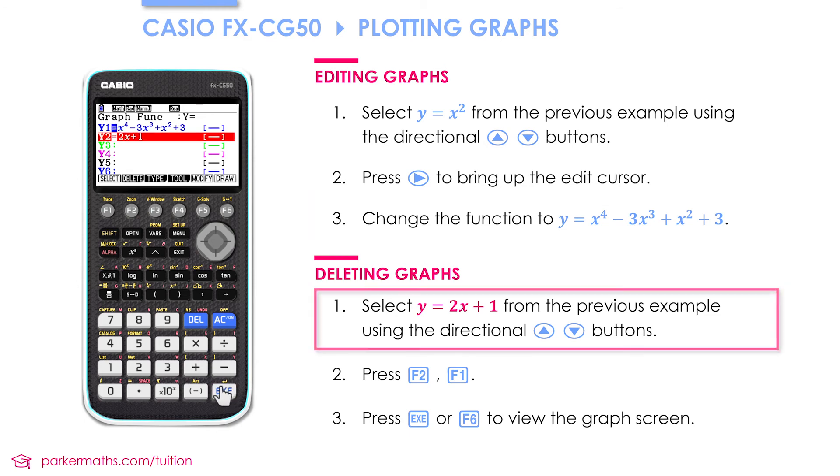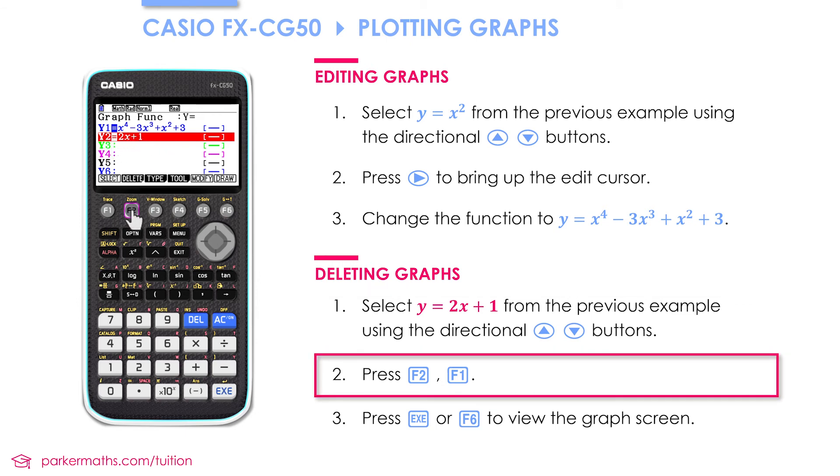I'm also going to delete the 2X plus 1 function. To do that I first of all make sure the correct function is highlighted. Then I press F2 for delete, and then F1 to confirm, which leaves me with a single function.